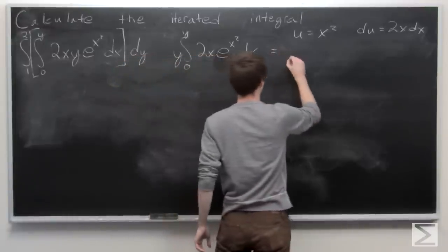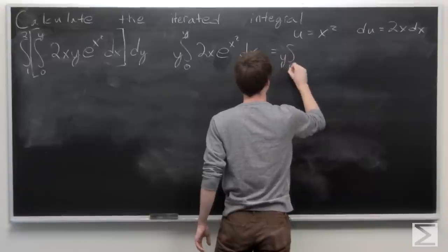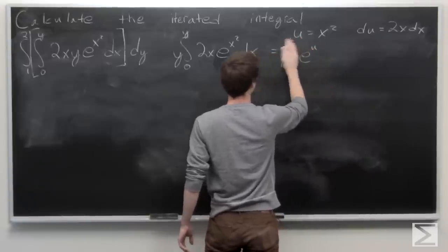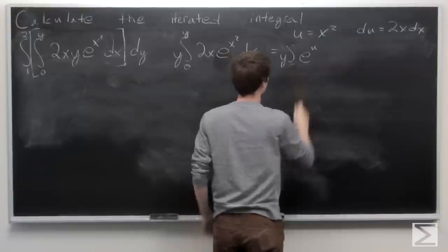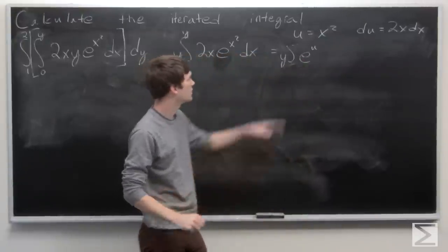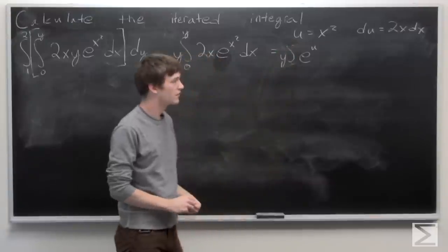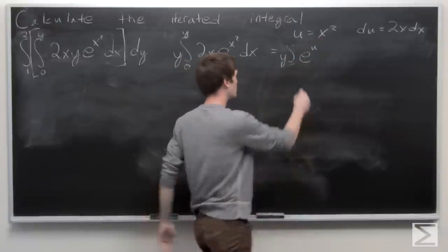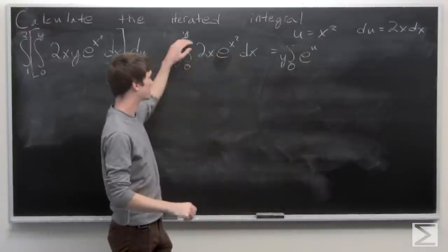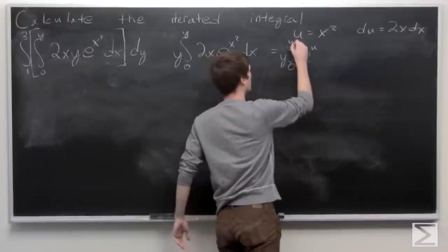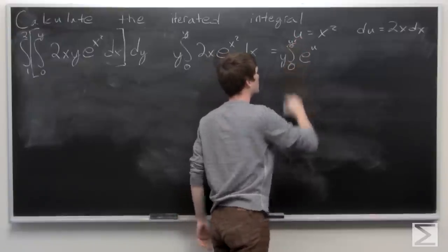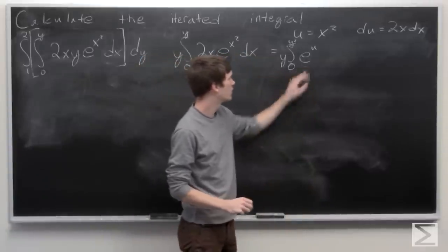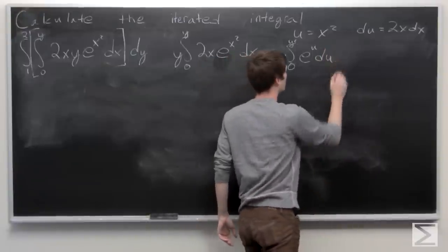Our integral simplifies to e to the u. We also need to change our limits of integration: when x is 0, u is also 0, and when x is y, u is y squared. So we have y times the integral from 0 to y squared of e to the u du.